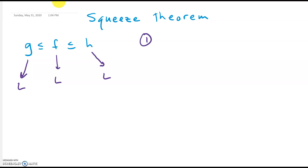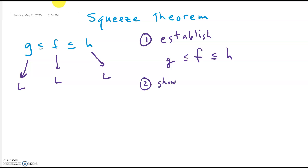The basic procedure is: step one, you have to establish the inequality. Usually in a typical homework question, they give you some function f and say show that f approaches zero or whatever. You have to figure out some h and some g where f is in between. Once you've established that, you can show that the lower bound g is approaching the limit, and that h, the upper bound, is also approaching the limit. Then you can conclude that the middle function f is approaching L as well.